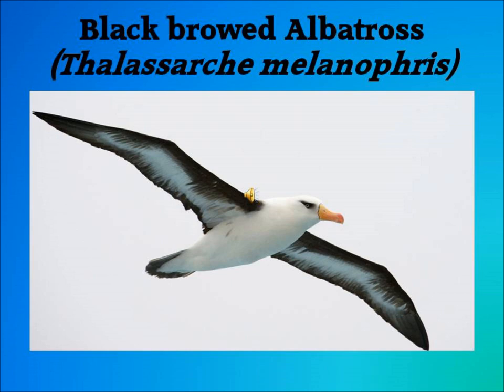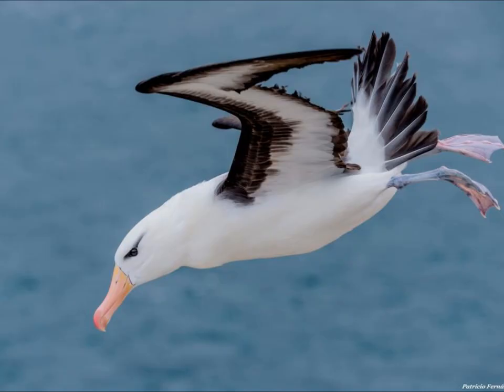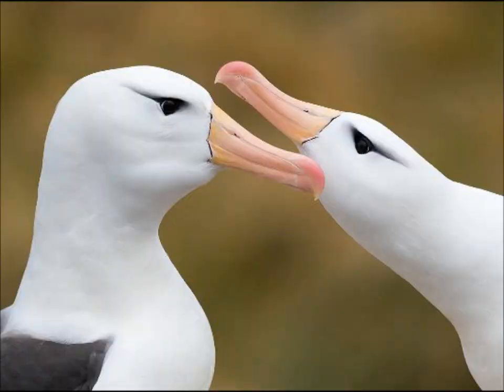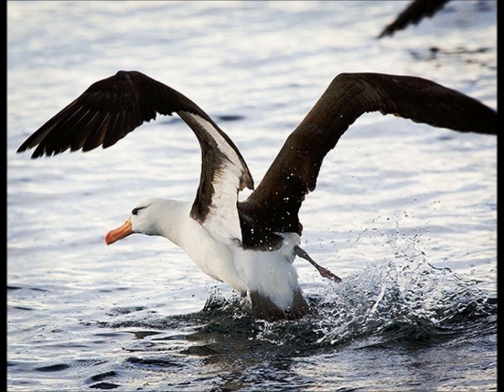The black-browed albatross is a circumpolar species located over Antarctic, sub-Antarctic and subtropical waters. They breed on sub-Antarctic and Antarctic islands between 46 and 56 degrees south. In 1998, the Falkland Islands were home to over 80% of the total population and were the most influential breeding locality for this species. Now 67% are in the Falklands, 12% in South Georgia, and 20% in Chile.